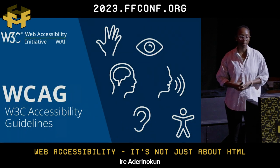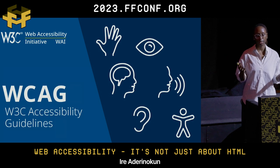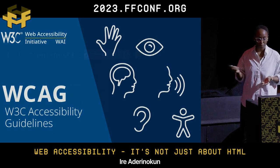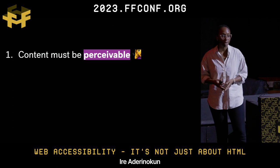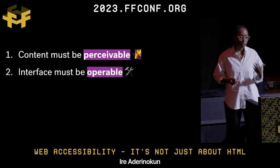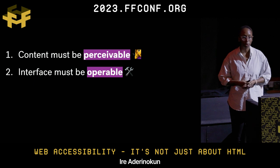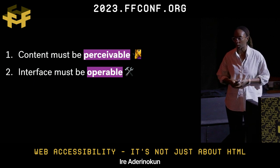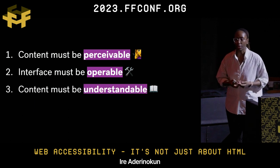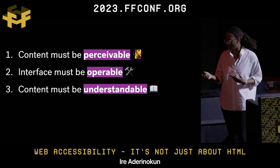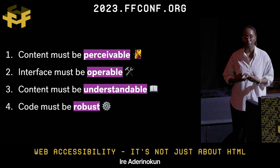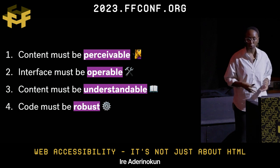When we talk about web accessibility, the definitive standard is the Web Content Accessibility Guidelines, which group guidelines under four key principles. First, content must be perceivable — you should be able to perceive content with one or more of your senses. Second, UI components need to be operable — you need to interact with the site using whatever input device you choose. Third, content must be understandable. And finally, the code must be robust, meaning it should be interpretable by user agents, including assistive technologies.